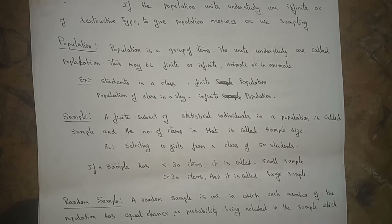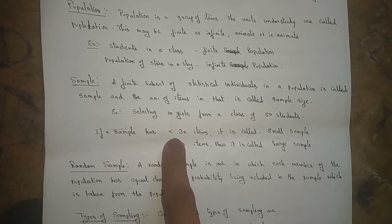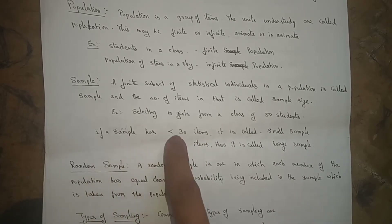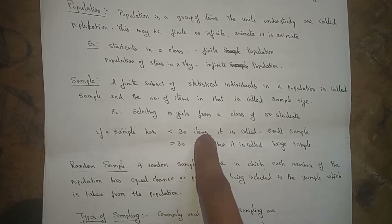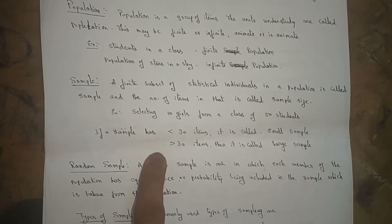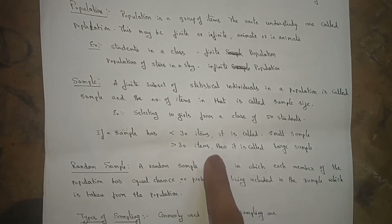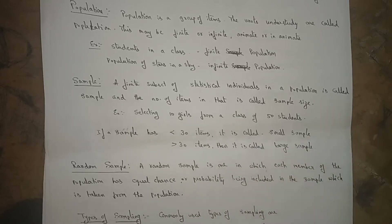If the sample size is less than 30 items, it is called a small sample. If the sample has greater than 30 items, then it is called a large sample.